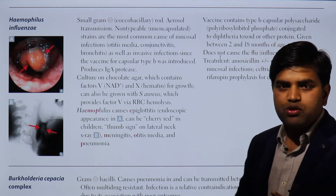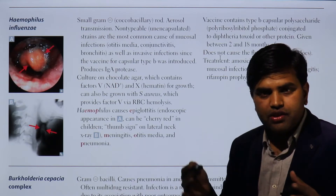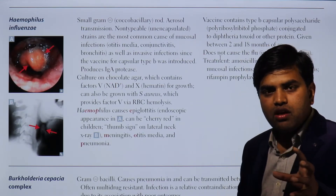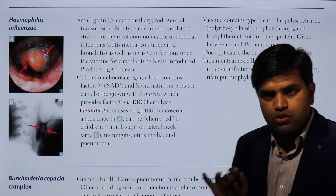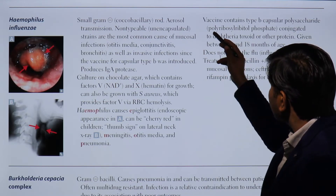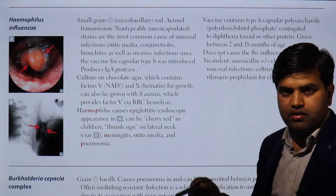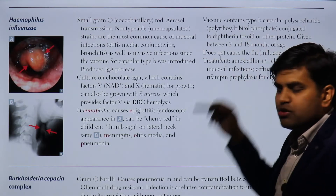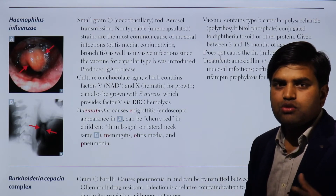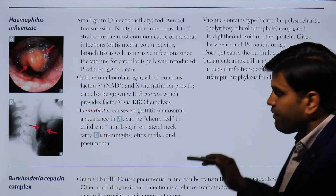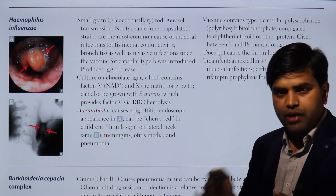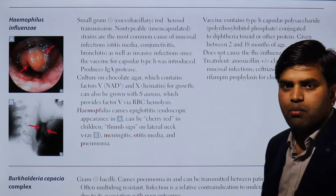Only protein antigens are processed via MHC class II, leading to T cell activation, B cell activation, plasma cell formation, and ultimately memory cell formation. Since polyribitol phosphate is not a protein, we conjugate it with a protein component — such as diphtheria toxoid — making it behave like a protein antigen. This allows memory cell formation and provides long-term protection. Any non-protein vaccine must be conjugated with a protein to generate memory and long-term immunity.